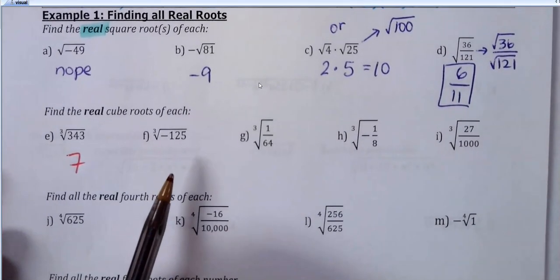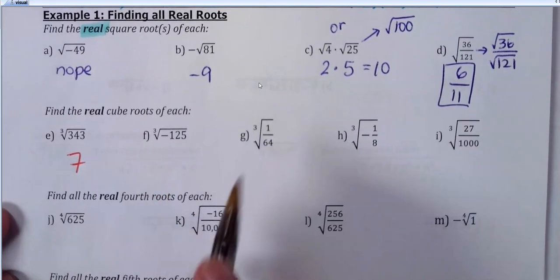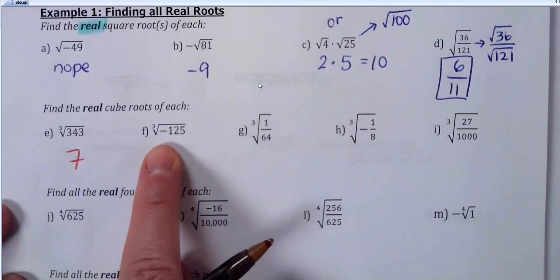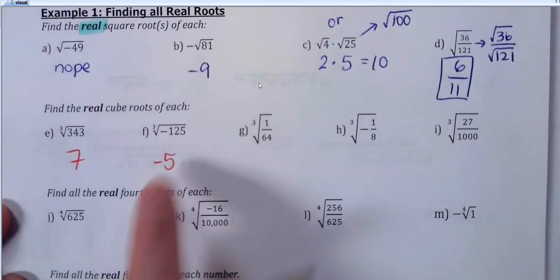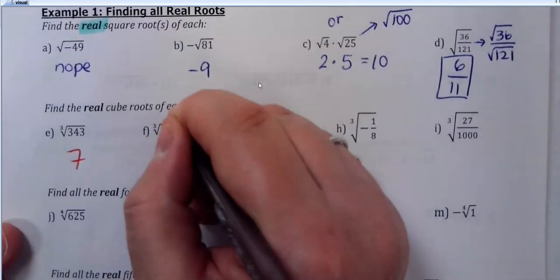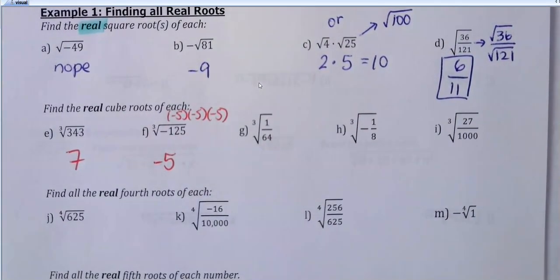What about the cube root of negative 125? You can do this — if it's a cube root, that means negative 5 times negative 5 times negative 5. The first two make it positive 25, but then the third one makes it negative. So it's okay to do negative as long as it's an odd root. This is a third root, so the answer is negative 5.